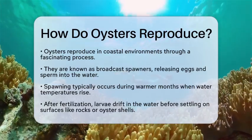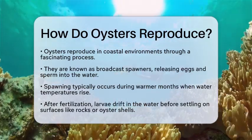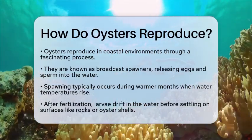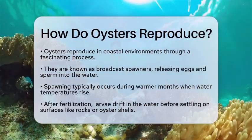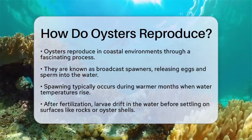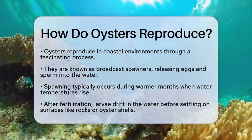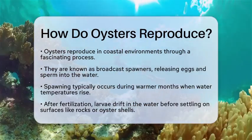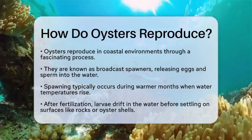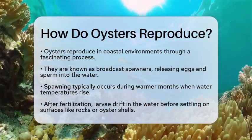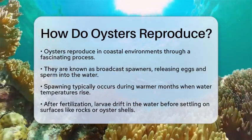Oysters are known as broadcast spawners. This means they release their eggs and sperm directly into the water. This usually happens during the warmer months when the water temperature rises. Once released, the eggs and sperm mix in the water, leading to fertilization.